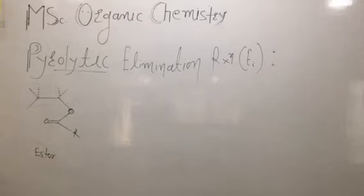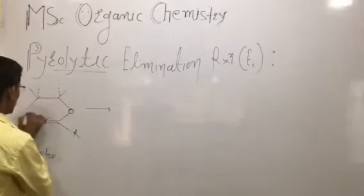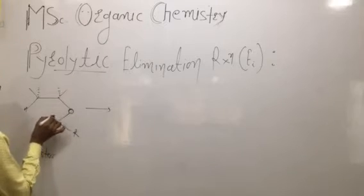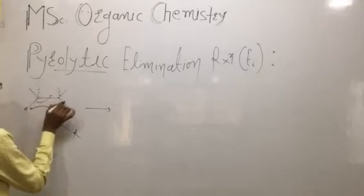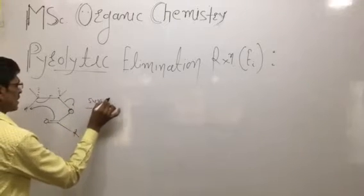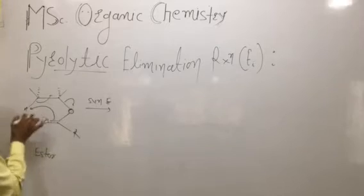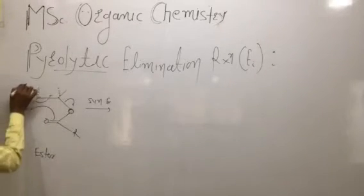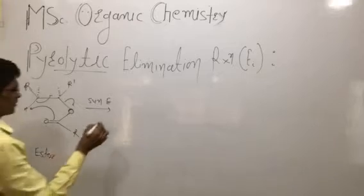Instead of oxygen, you can take a sulfur atom — then we call this a xanthate. There is a hydrogen atom here, and the lone pair of electrons has a tendency to take the proton. This is what we call syn elimination. There is an intramolecular proton abstraction taking place.